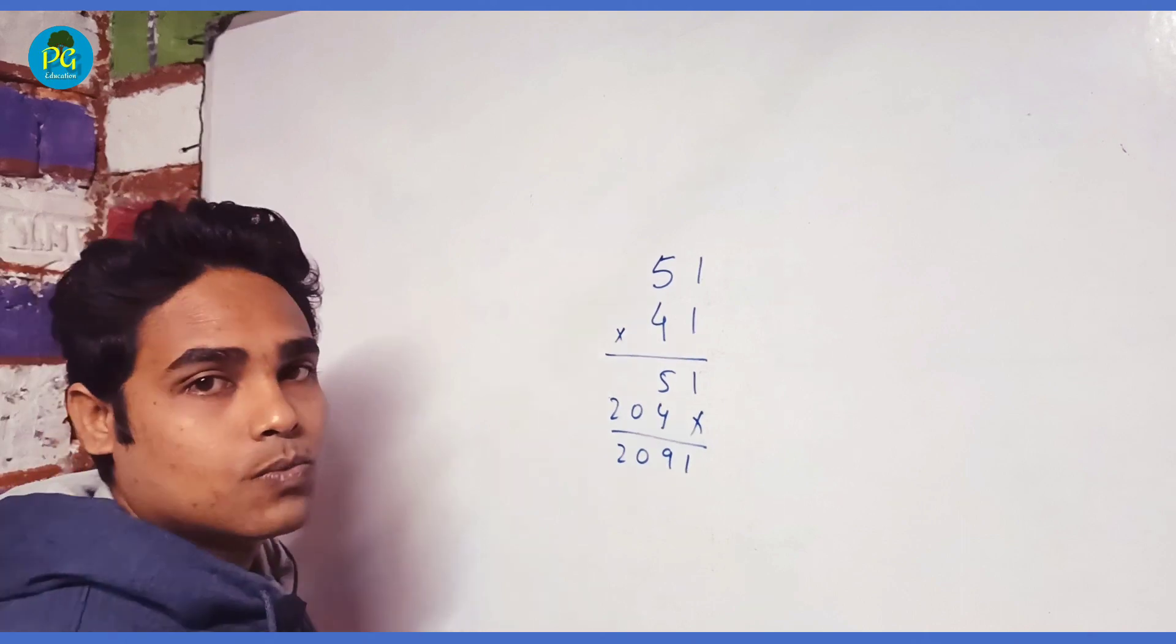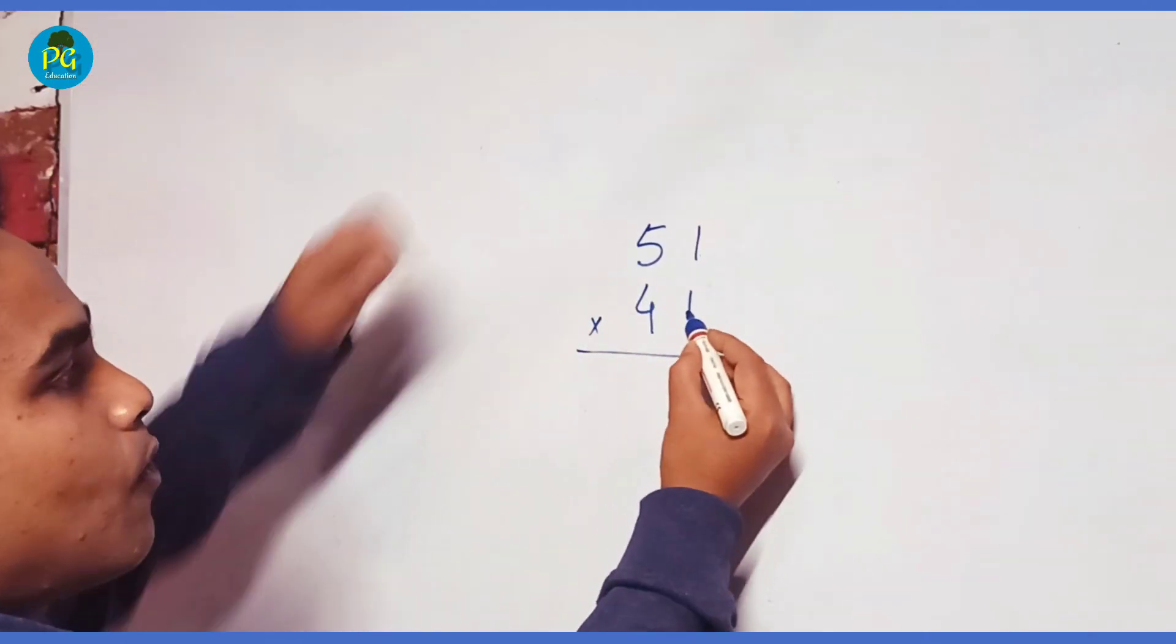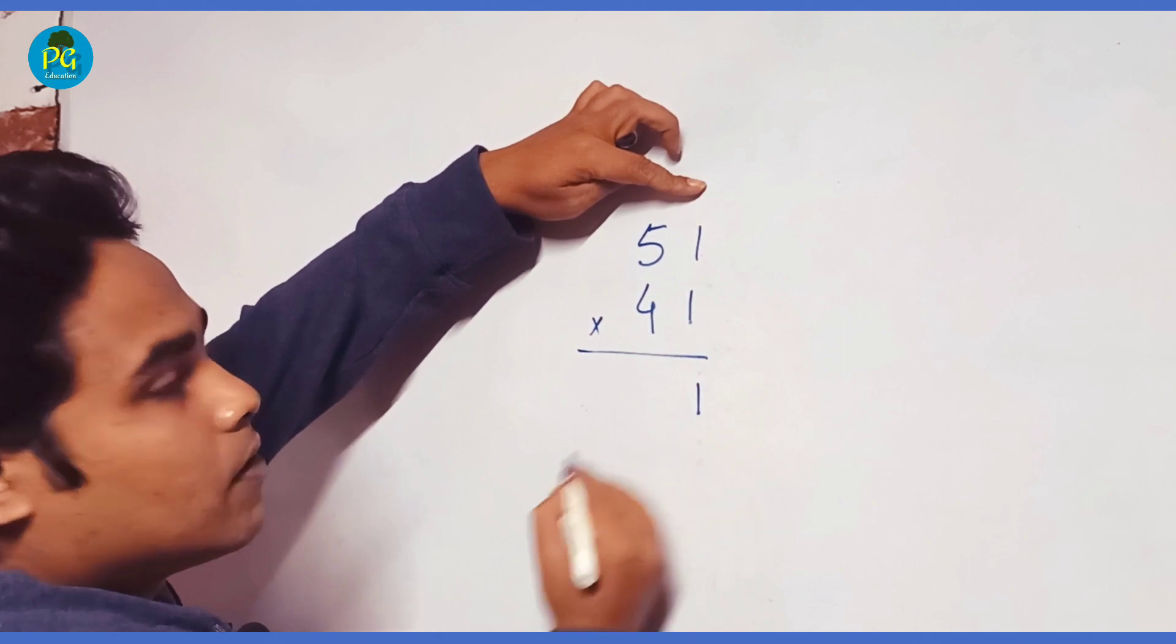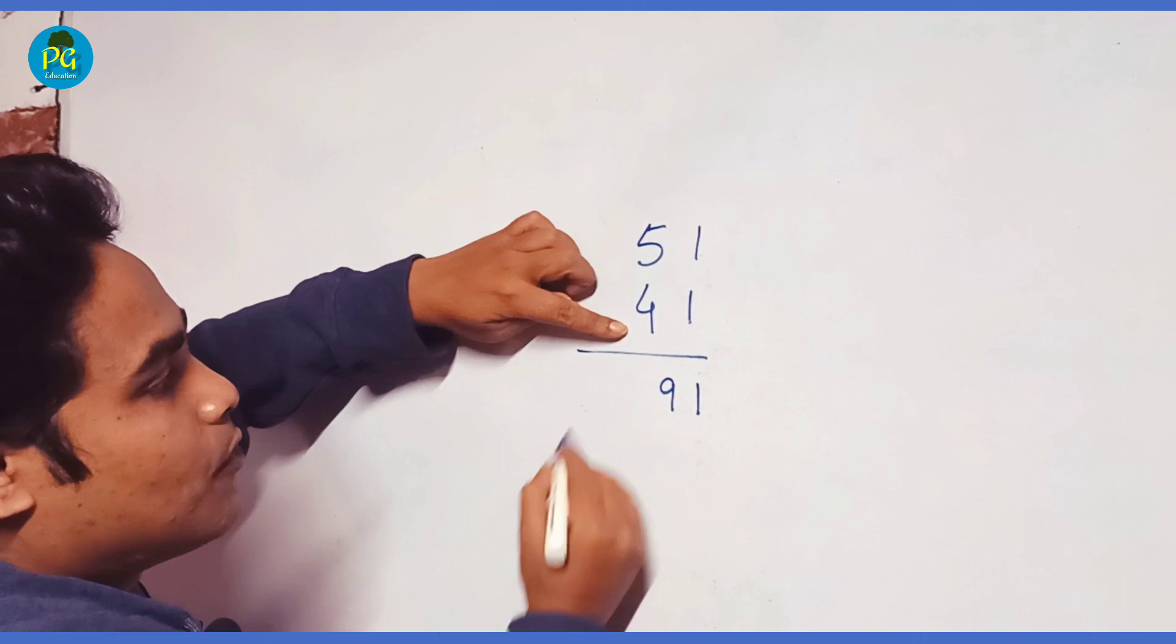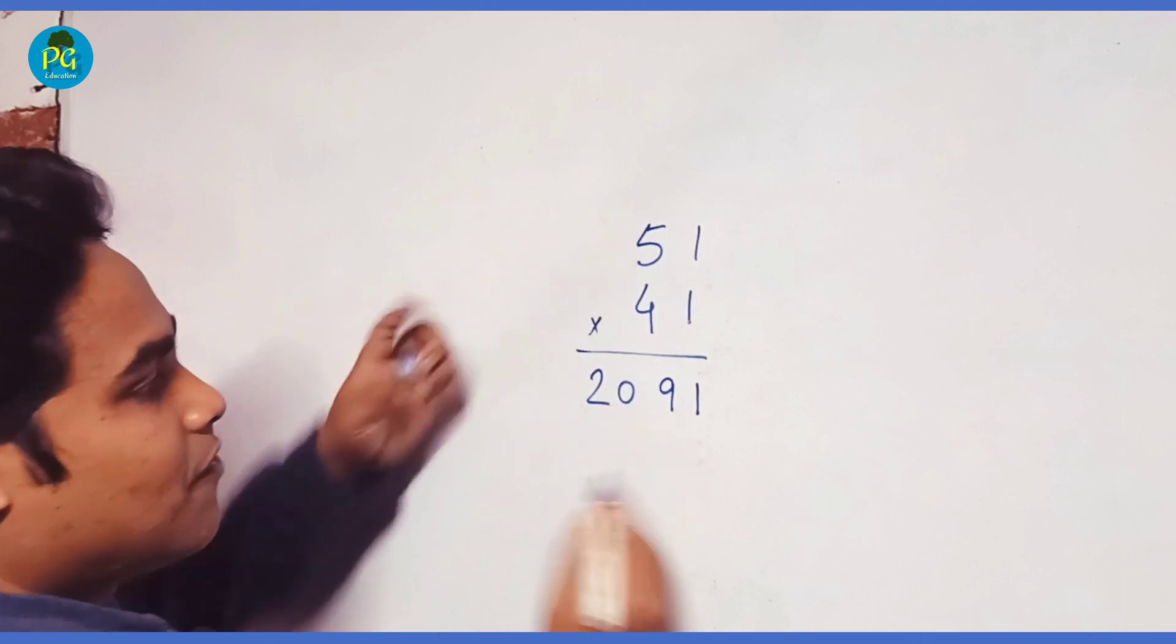But now onwards we will not do this process. Instead we will do 1, 1 is 1. Then 5 plus 4, 9 and finally 5 into 4, 20. Very easy.